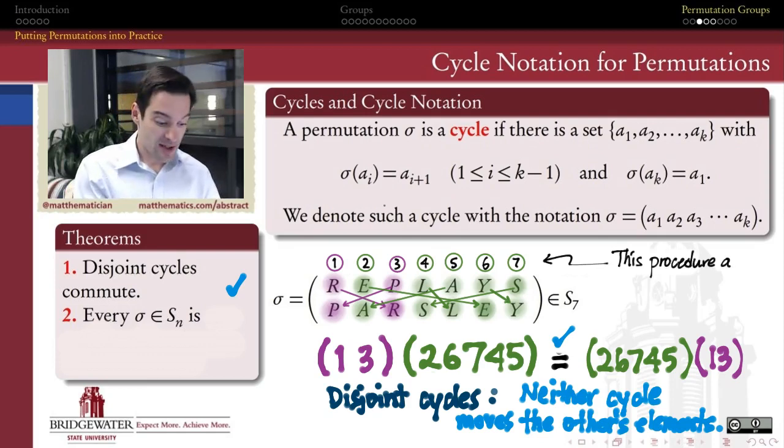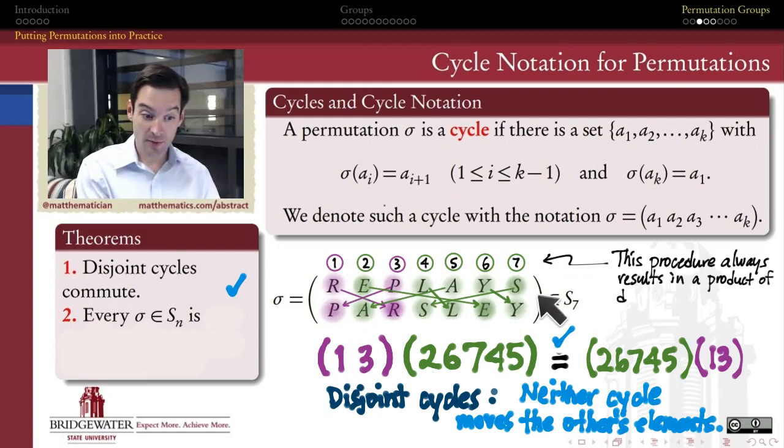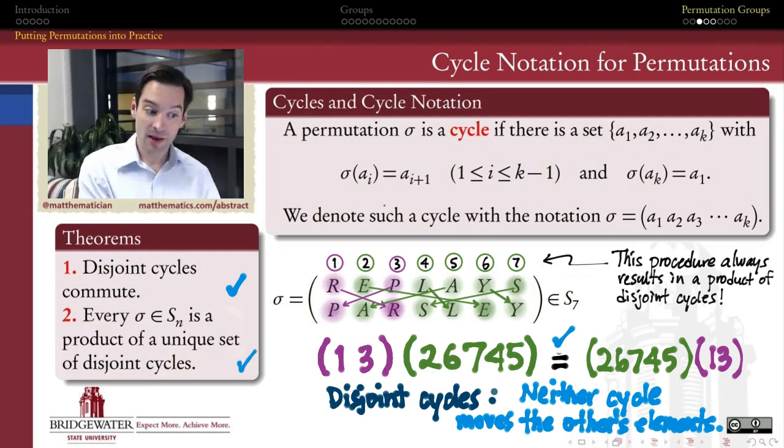The second thing we notice is that the process that we just underwent to figure out how to express this permutation starting from stack notation, getting it into cycle notation, this procedure will always result in a product of disjoint cycles. Because as soon as I figure out, as soon as I finish one circuit, the way that I finished this one and three here, and I move on to the next one, I know the next one's not going to overlap with my first one. Just based on the construction that we used here to come up with this. So that actually suggests a proof of a second theorem here. That in fact, every permutation, any stack notation that I can write down for how to permute the elements of a set, I can always use this process to express it as a product of disjoint cycles.